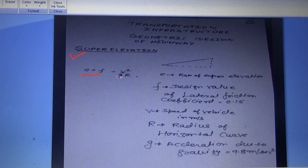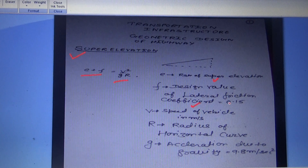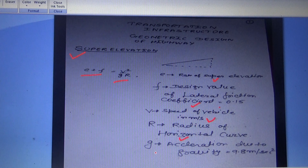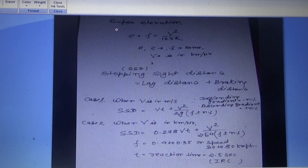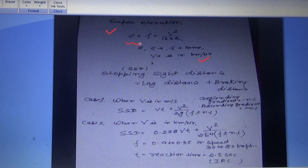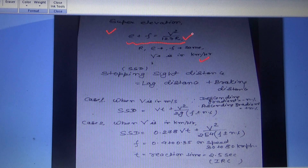The first important formula is related to super elevation: e + f = V² / gR, where e is the rate of super elevation, f is the design value of lateral friction coefficient (0.15), V is the speed of vehicle in meter per second, R is the radius of horizontal curve, and g = 9.8 m/s². When V is in km/h, the formula becomes e + f = V² / 127R.